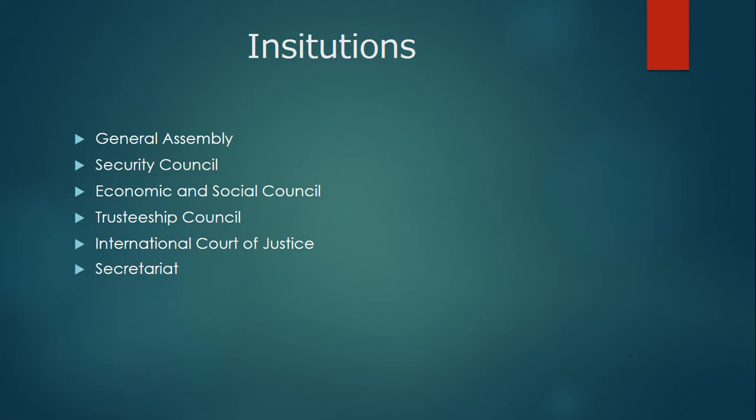There are six major institutions: the General Assembly, Security Council, Economic and Social Council, Trusteeship Council, International Court of Justice, and the Secretariat. In addition, many additional institutions and subsidiary bodies are located within the UN.